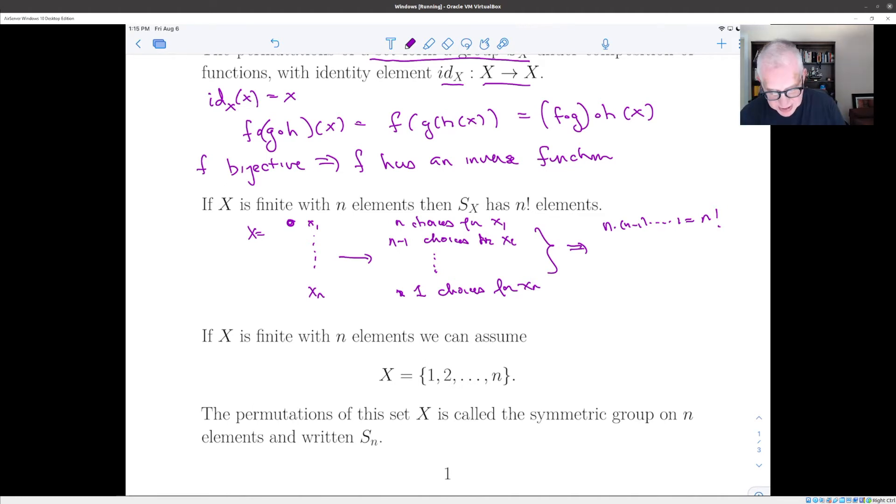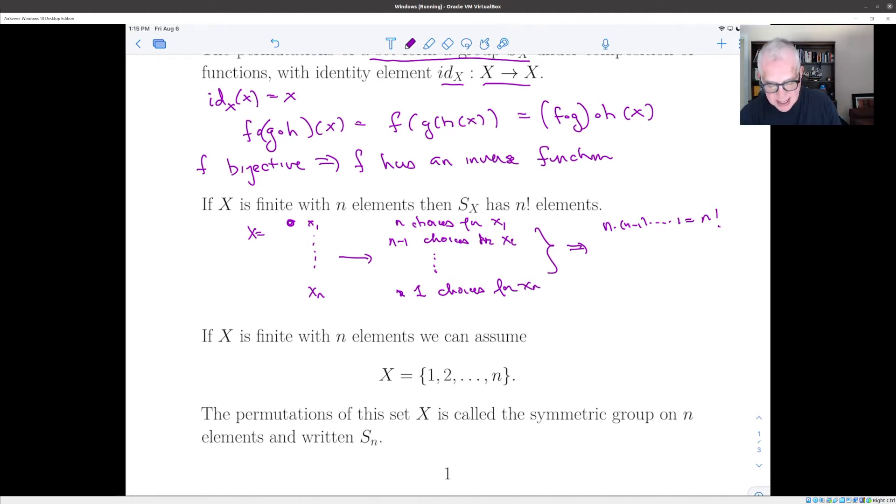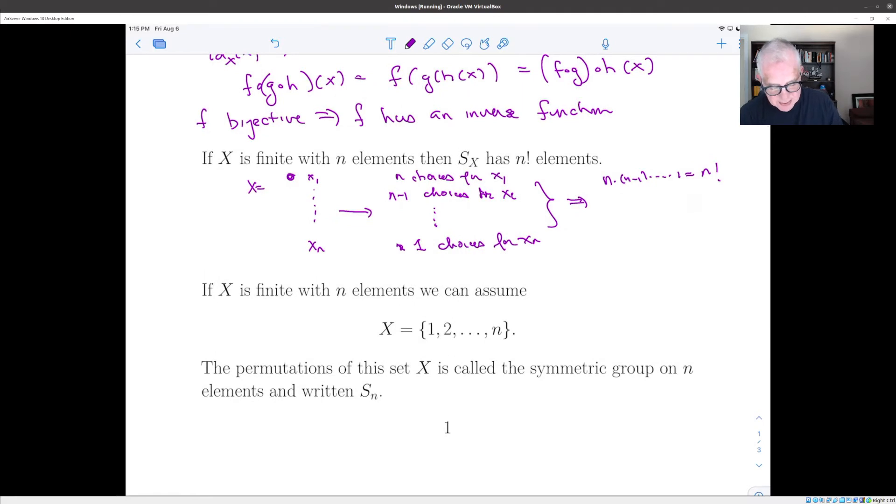and then go back to figure out what elements we were speaking of. So when we consider permutations of the set of numbers from one up to n, that group is called the symmetric group on n elements, or sometimes the symmetric group on n letters, and the standard notation for it is S_n, and it has n factorial elements.